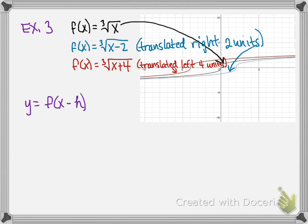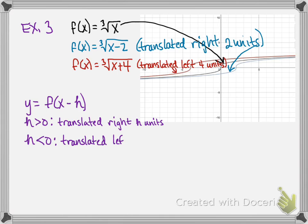In general, for a transformation of the form y equals f of x minus h: if h is greater than 0, then our graph is translated right h units; and if h is less than 0, then our graph is translated left the absolute value of h units.